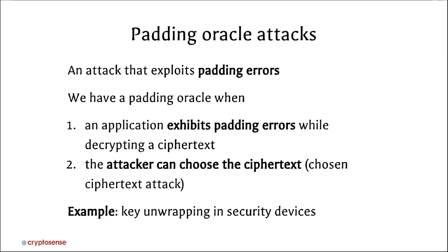A padding error means the final plaintext block was not correctly padded — it's ambiguous, so the system doesn't know what to do and signals an error. That's the first ingredient the attacker needs. The attacker also needs to be able to manipulate the ciphertext to some extent — generally we talk about chosen ciphertext attacks, where the attacker has free choice over the ciphertext.